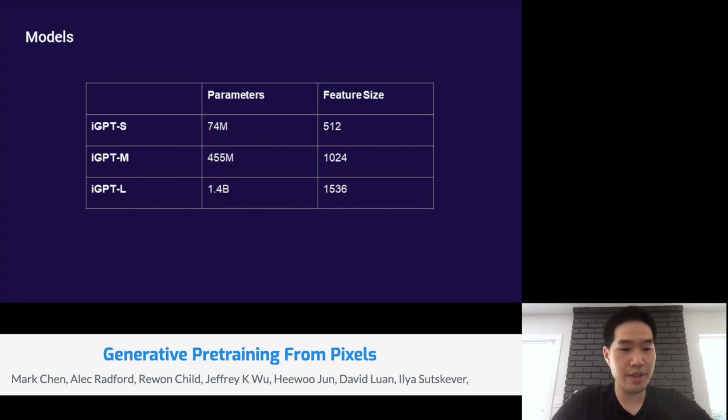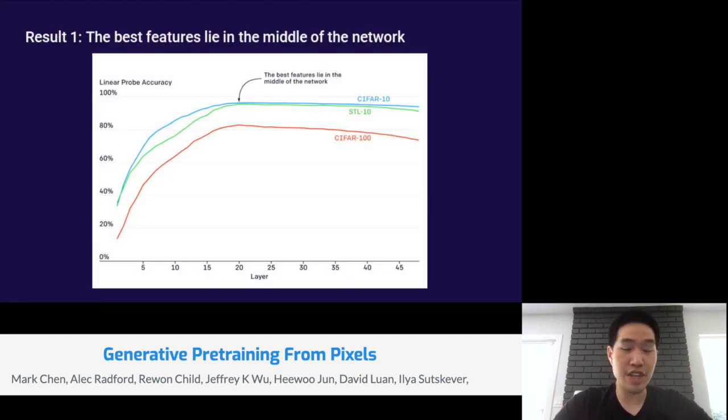Next, I'm going to talk about the different models that we trained in our work. We trained models of three different sizes, which we'll call IGPT S, M, and L. They consist of 74 million, 455 million, and 1.4 billion parameters respectively. It's also important to note their feature sizes: 512, 1024, and 1536. Now 1536 is pretty comparable to that of a standard ResNet 50, which comes in at 2048 features, so the ResNet is much more parameter efficient.